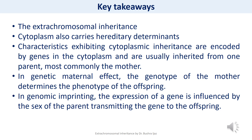The main key takeaways from today's lecture: extra chromosomal inheritance — also called cytoplasmic inheritance — is the inheritance of traits through DNA not connected to the chromosome but rather to the DNA from organelles in the cell, which are mitochondria and chloroplasts in the case of plants. The cytoplasm also carries inherited determinants. Characteristics exhibiting cytoplasmic inheritance are encoded by genes in the cytoplasm and are usually inherited from one parent, mostly the mother. In genetic maternal effect, the genotype of the mother determines the phenotype of the offspring; while in genomic imprinting, expression of the gene is influenced by the sex of the parent transmitting the gene.